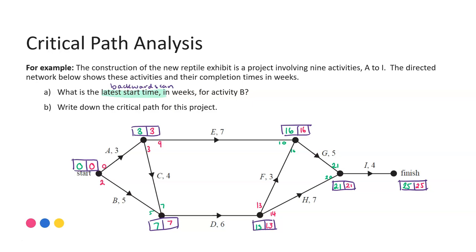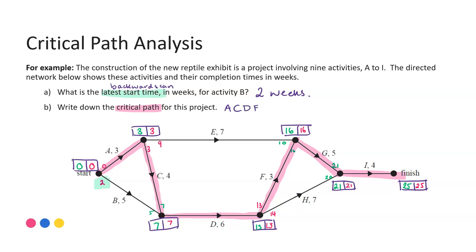The first question: what is the latest start time for activity B? It's really important that we've written those values on the edge, because the latest start time is your backward scan value for that activity - not what we put in the box. In this case, the latest start time for activity B is two weeks. For our critical path - the sequence of activities from start to finish where there is no float time - A was the activity that gave me zero as the latest start time. C was the next activity with the lowest latest start time. From here, D is the only option. F gives me the 13 that went in the box. G is the only option, then I. So the critical path is A, C, D, F, G, I.